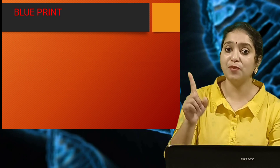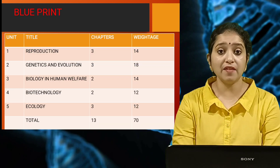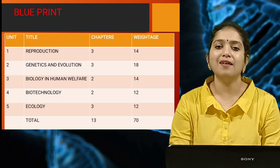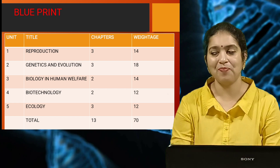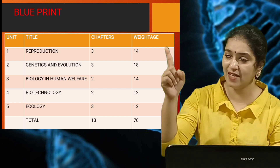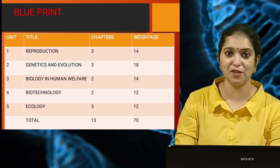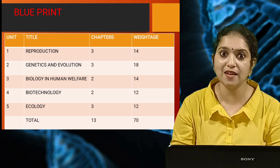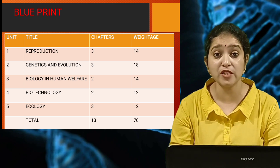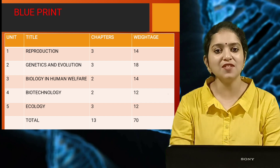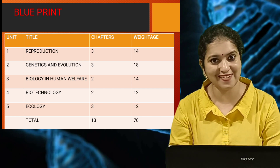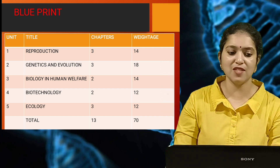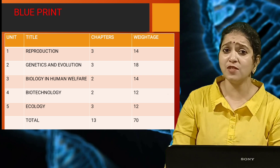Now we will move on to the blueprint. There are 5 units in the NCERT Biology textbook, and each of these units carry 2 or 3 number of chapters. Unit 1, Reproduction, has a weightage of 14. Likewise, you can see all the weightages being given to different units. More weightage is given to the second unit, that is Genetics and Evolution, where you will get more number of questions from two chapters — Principles of Inheritance and Molecular Basis of Inheritance. Then Biotechnology, with different chapters and different weightages being given. Do not strictly stick to this weightage as it can vary.